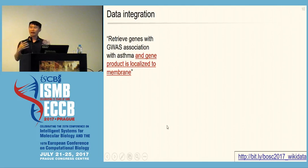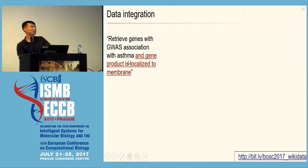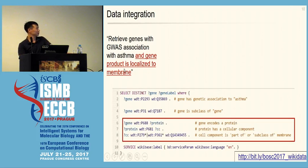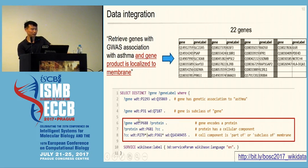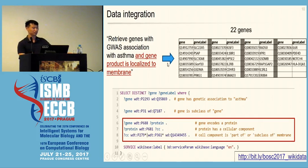But suppose we want to start integrating data from multiple sources. Suppose we want genes associated with asthma where the gene product is localized to the membrane. Membrane localization is a cellular component from the Gene Ontology Consortium. To add that query, you add three lines to your SPARQL query, and your 39 genes gets trimmed down to 22 genes. Now we're seeing integration between the various things we've loaded into Wikidata.